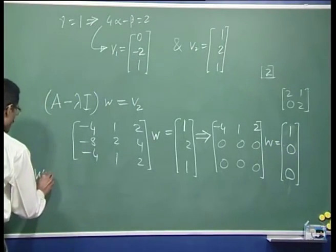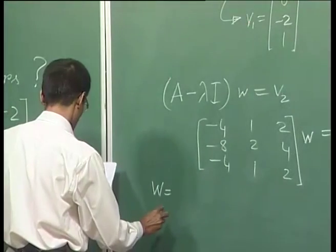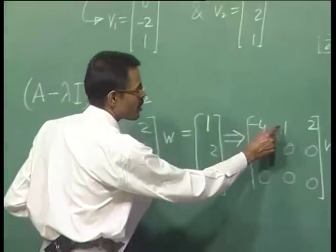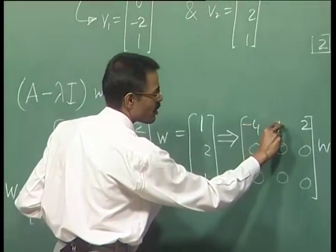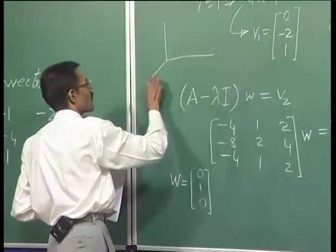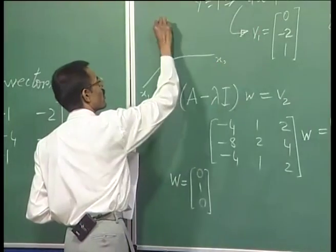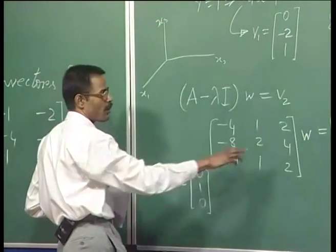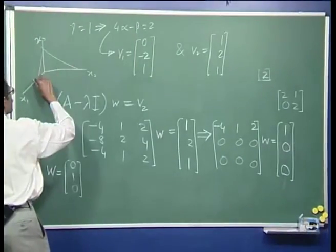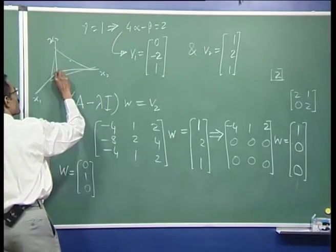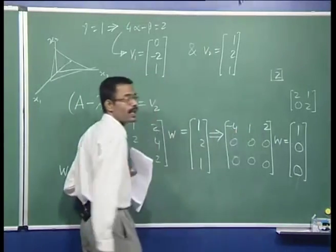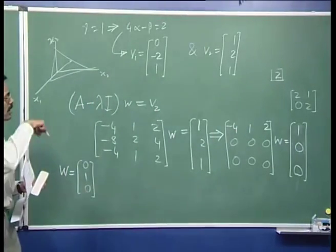We can take w to be [0, 1, 0]. You can verify: 0 plus 1 plus 0 equals 1, which is satisfied. In the 3D space, this single equation is acting like a plane, and any vector from the origin to this plane is a valid generalized eigenvector in this case.